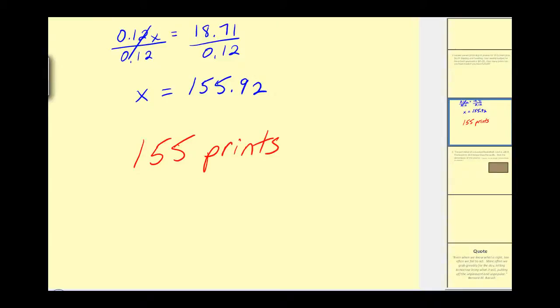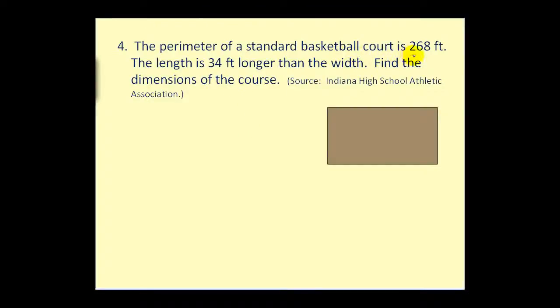Let's go ahead and take a look at one more question. The perimeter of a standard basketball court is 268 feet. The length is 34 feet longer than the width. So that's key. We need to express this relationship. So this is 34 feet longer than this. So if we let this equal x, this would have to be x plus 34.